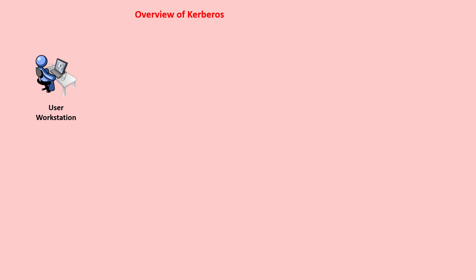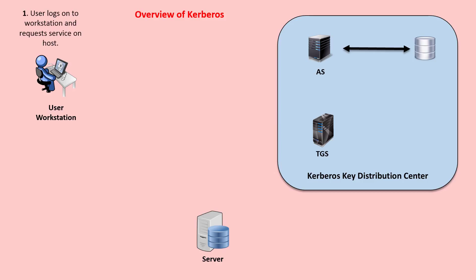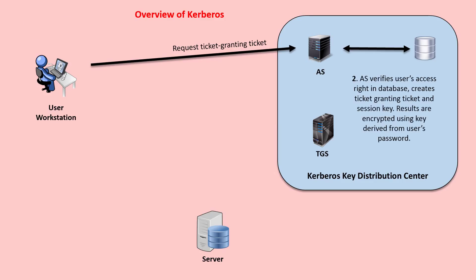Now, let me show you how the Kerberos authentication works. Firstly, a user logs on to a workstation and requests service on a host. The workstation sends a message to the authentication server requesting a ticket-granting ticket. The authentication server verifies the user's access rights in the database, creates a ticket-granting ticket and session key, and the results are encrypted using a key derived from the user's password.